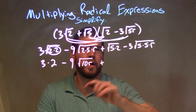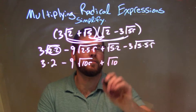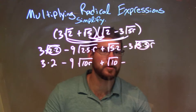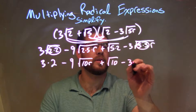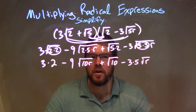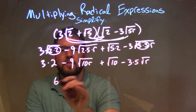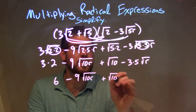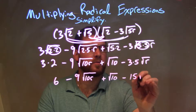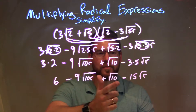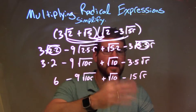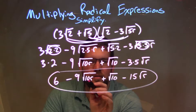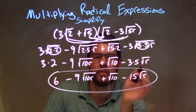5 times 2 — again, no pairs, no way to break it down — so we have square root of 10. This last one: I have a pair of 5s, so the pair of 5s brings an individual 5 on the outside, giving us 3 times 5 times the square root of just r. So tightening this up: 3 times 2 is 6, minus 9 square root of 10r, plus square root of 10, and minus 3 times 5 is 15, so minus 15 square root of r. Since there are no matching square roots, I cannot combine anything. My final answer is 6 minus 9 square root of 10r plus square root of 10 minus 15 square root of r.